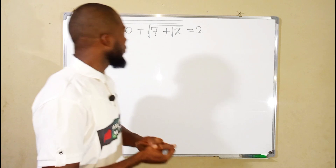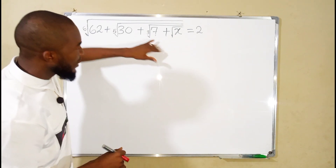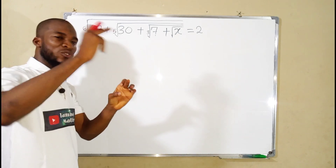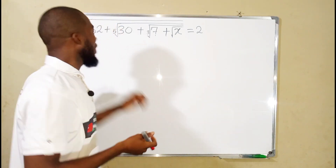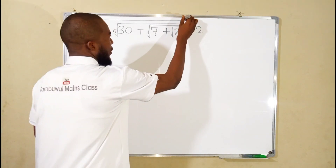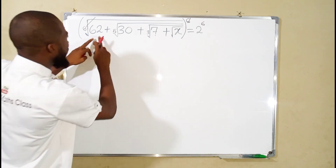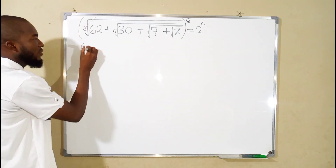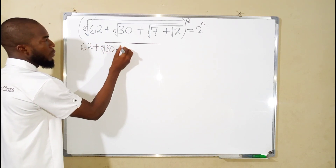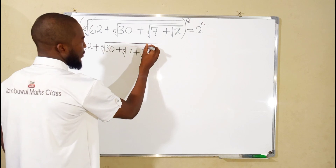Now let us give it a try. You can see we have different roots, one under another — the square root of X is under the cube root, the whole of this is under the fifth root, and the whole of this is under the sixth root. We are going to eliminate these roots one after the other. The first should be the outermost, which is the sixth root. To eliminate it, we take the power of six from both sides. This power of six will cancel the sixth root, leaving inside: 62 plus the fifth root of 30 plus the cube root of seven plus the square root of X.